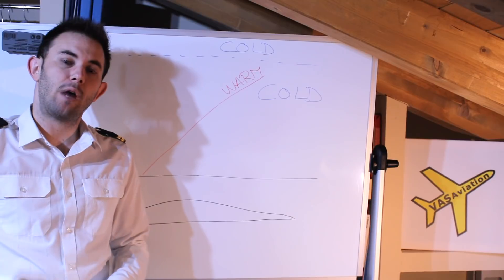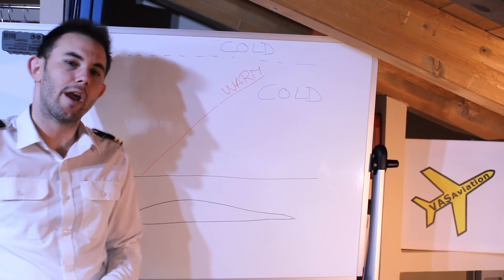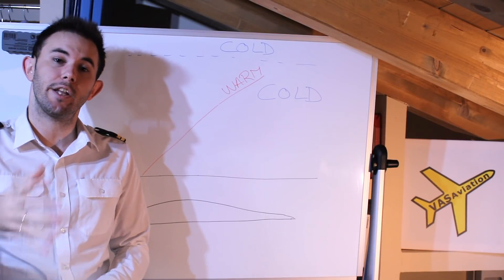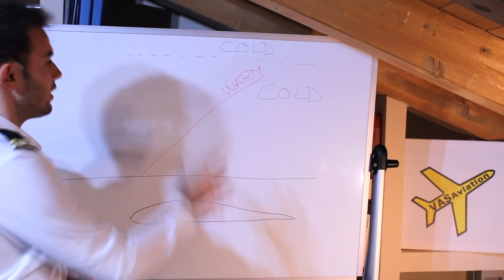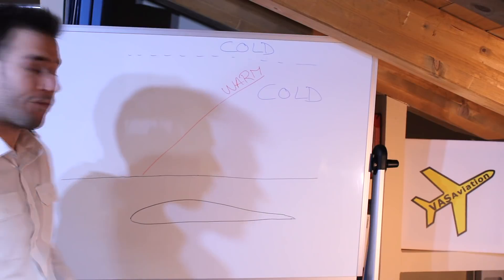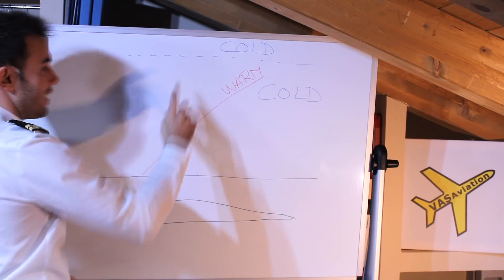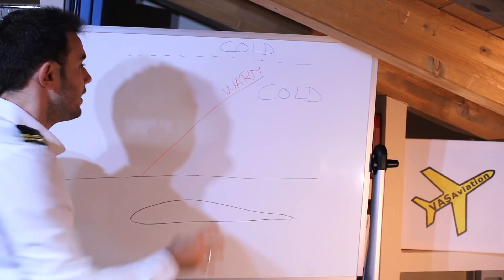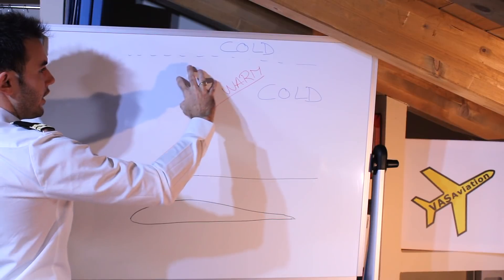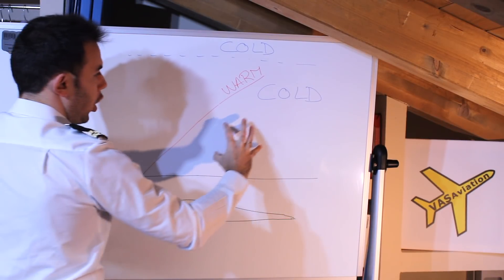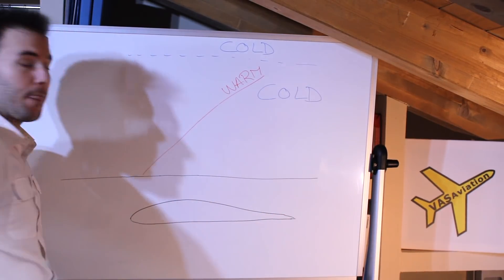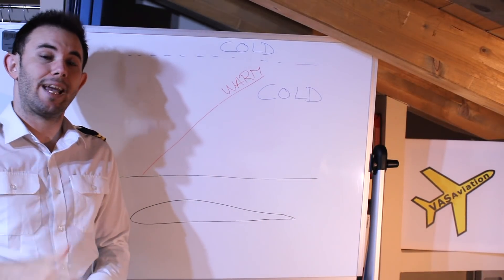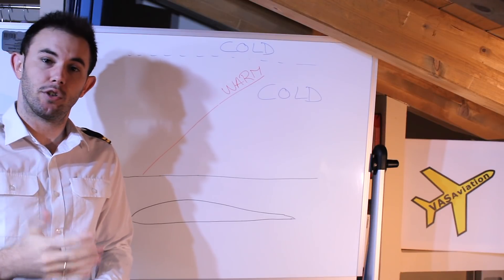The first thing we need to know about freezing rain is when and where it forms. Normally, freezing rain is associated with warm fronts. This is the profile of a warm front — we have a warm air mass, and remember, warm doesn't mean hot. This just means this air mass is warmer than the cold air mass beside it. Freezing rain is associated with warm fronts and temperature inversions — keep that in mind.